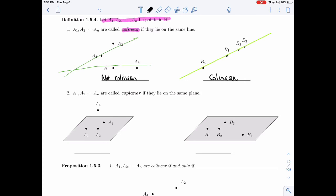Similarly, points A1 through AN are called coplanar if they lie on the same plane. Here in that case, I meant A4 to be higher than the plane. So these are not coplanar. Well, on this side, they're all on the plane. So these points are coplanar.